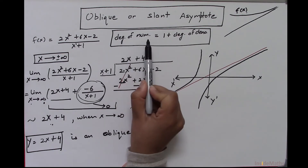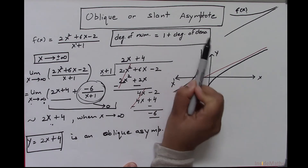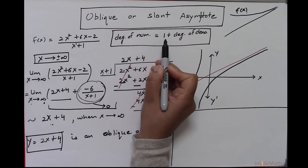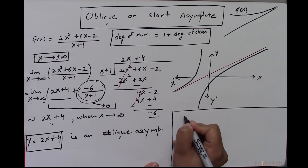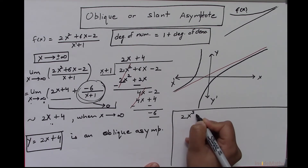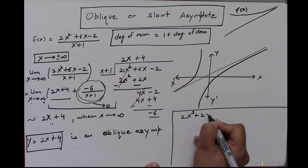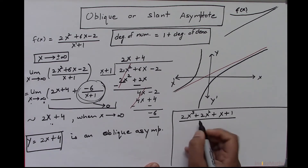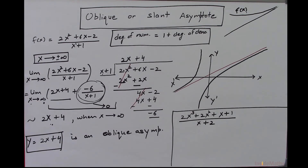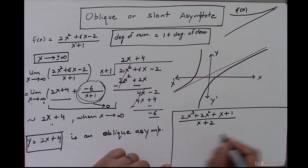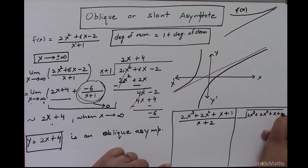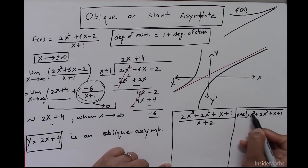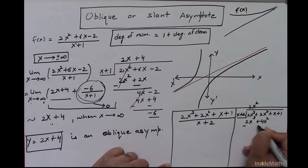One more thing: the degree of the numerator must be exactly 1 more than the degree of the denominator. What if the degree of the numerator is more than 1 plus the degree of the denominator? Let's take the function (2x³ + 2x² + x + 1) divided by (x + 2). Performing long division: multiply (x + 2) by 2x², giving 2x³ + 4x². After subtracting, the leading term cancels.